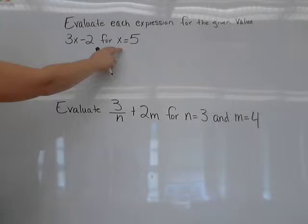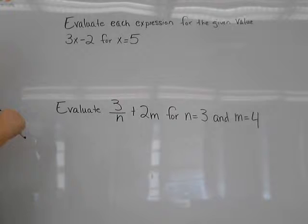In this case, 3x minus 2 for x equals 5. Here, 3 and x when they're right next to each other means they're being multiplied.